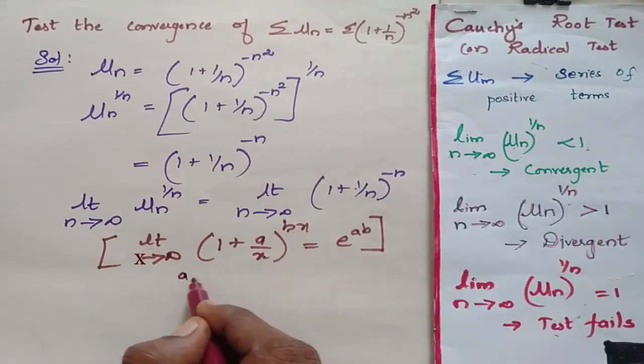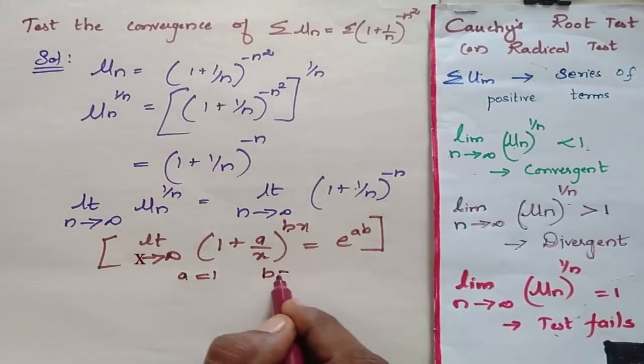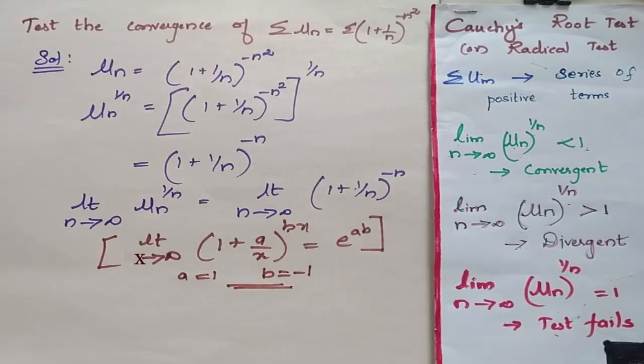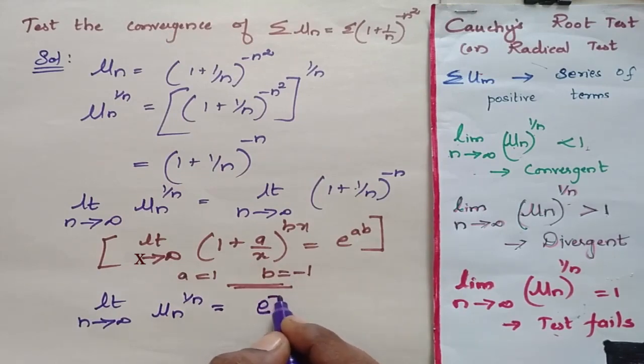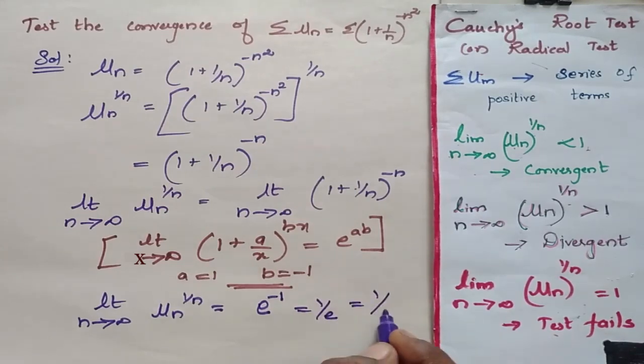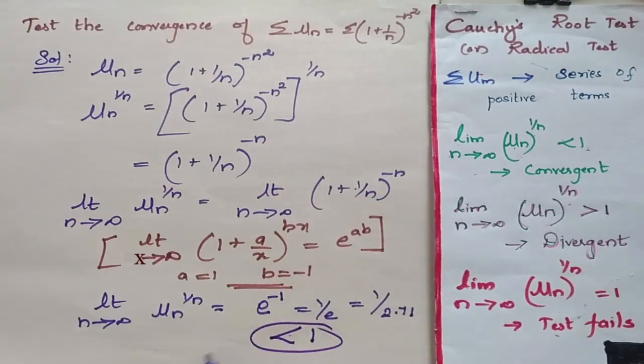So when I go for a is equal to 1, b is equal to minus 1, now my limit n tending to infinity of un to the power 1 by n is equal to e power minus 1. 1 into minus 1 is minus 1. So this is equal to 1 by e. This is equal to 1 by 2.71 which is quite lesser than 1. So it is convergent.